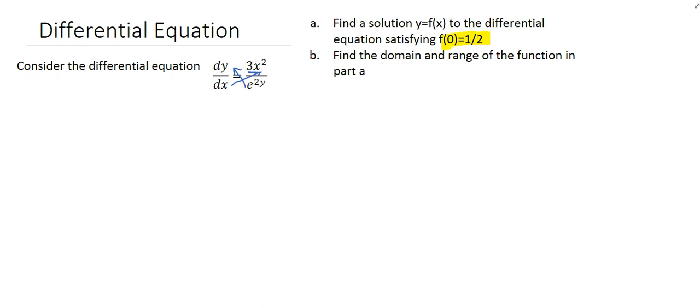If you cross-multiply here, you get e^(2y) dy equals 3x² dx. And now we have the variables separated with the dy's matching up with the y's, and the x's matched up with the dx's so we can integrate both sides.